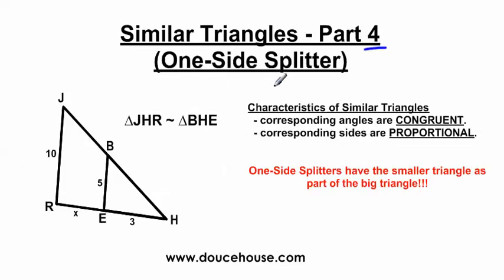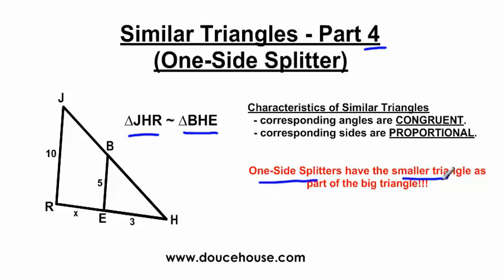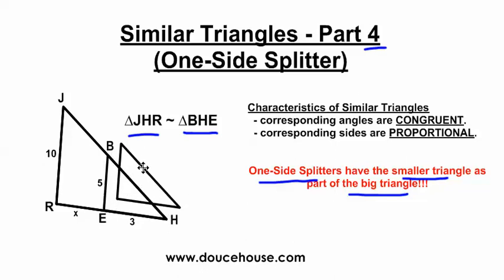I'm going to explain why I call this a one side splitter. Keep in mind these are still similar triangles, so I still have two triangles that are similar to each other. I've got triangle J-H-R, and then it is similar to triangle B-H-E. On the one side splitter, the small triangle is always going to end up being part of the big triangle. I've got a small triangle that is sharing the sides of the big triangle, and this is called a one side splitter because this side of the small triangle is splitting the side from R to H into two parts.